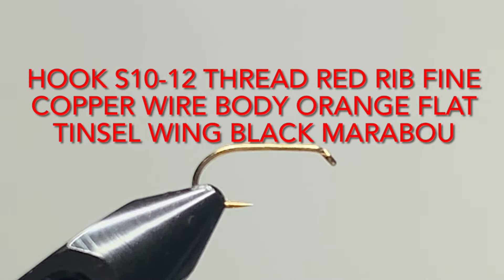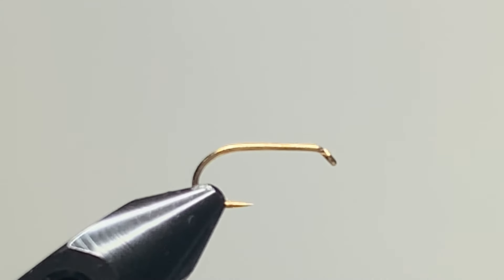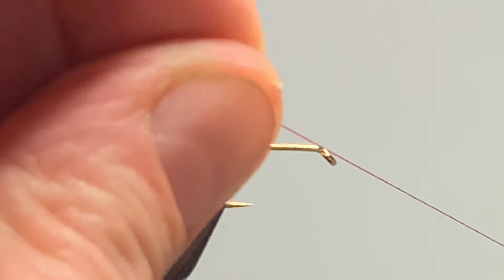Today I'm going to tie an orange cormorant. In the vise I have a size 10 wet fly hook, and the thread I'm going to be using is a pre-waxed red thread.